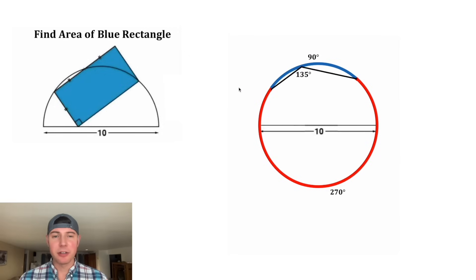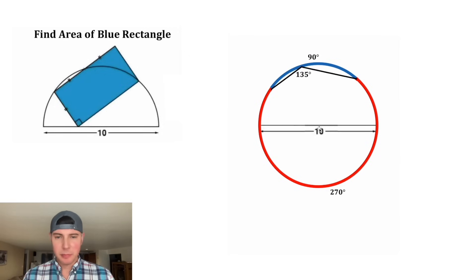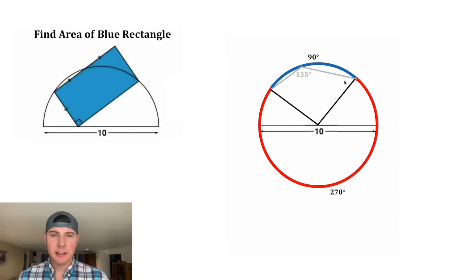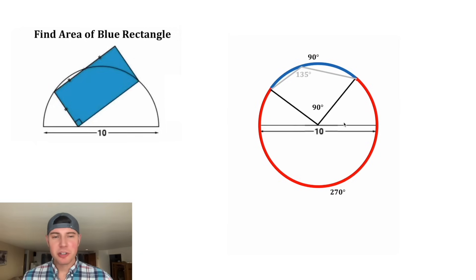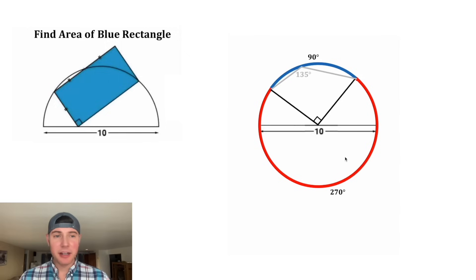Since the red arc is 270°, that leaves us 90° for the blue arc. For the next step, let's draw this radius here and this radius here, and let's focus on this 90° arc. This angle right here is called a central angle, and central angles are equal to the subtended arcs, so this is going to be a 90° angle, and we usually notate that as a box in the corner.